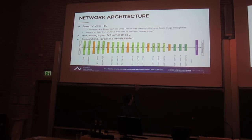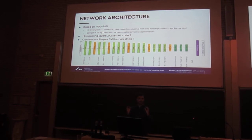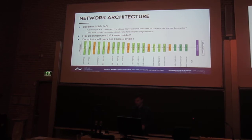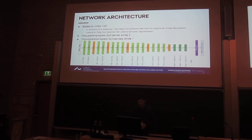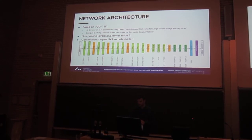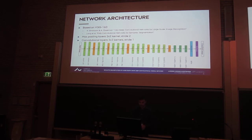But due to all these pooling layers, the intermediate feature maps are shrunk by a factor of 2 each time. So we need to do some upscaling to get a one-to-one mapping, and that's done with the deconvolution layer at the end. Then finally we have a softmax classification and the final output.